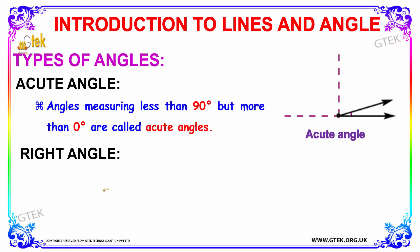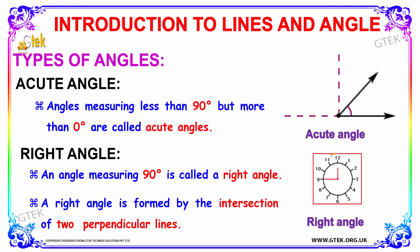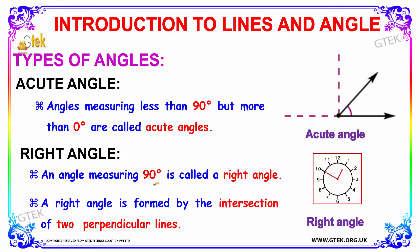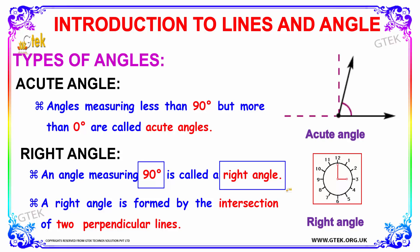The first type is acute angle — angles measuring less than 90 degrees but more than 0 degrees are called acute angles. Next is right angle — an angle measuring exactly 90 degrees is called a right angle. A right angle is formed by the intersection of two perpendicular lines.